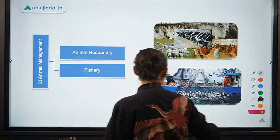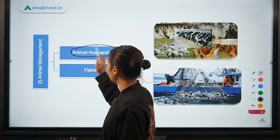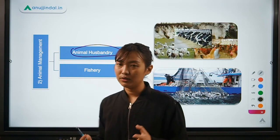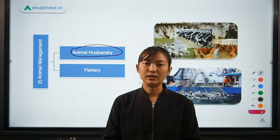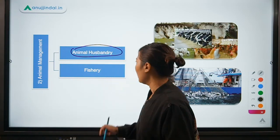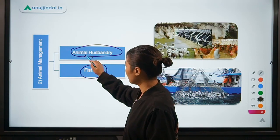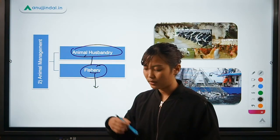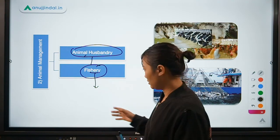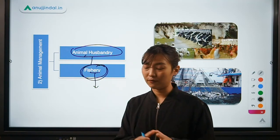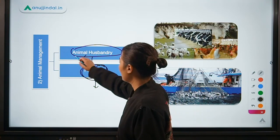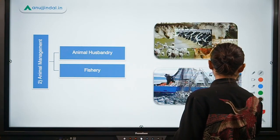Under animal management, the first branch is animal husbandry, which deals with the rearing and breeding of animals for food, milk, dairy products, manpower, and as a source of fertilizer or manure. The second branch is fisheries, which involves the rearing and breeding of fishes — and is not confined to fish alone, but also includes prawns, shrimps, oysters, and other aquatic species.